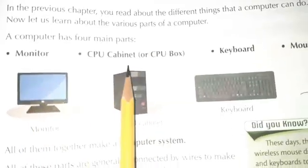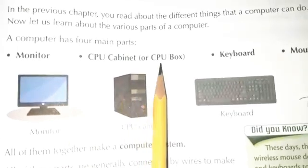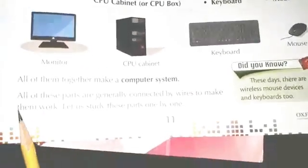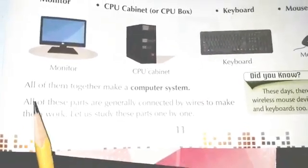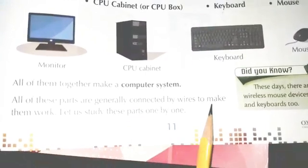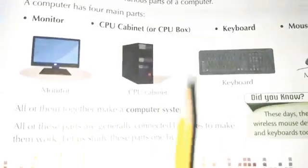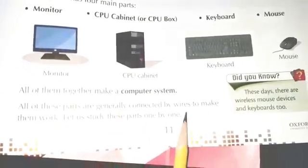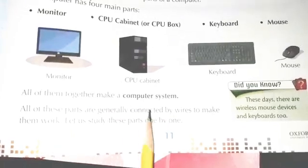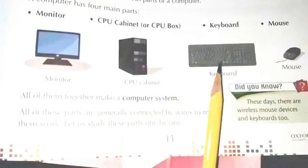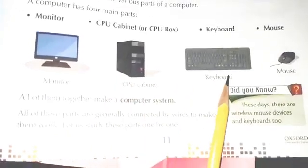A computer has four main parts: first, the monitor; second, the CPU cabinet; third, the keyboard; and fourth, the mouse. All of these parts are generally connected by wires to make them work. Let us study these parts one by one.